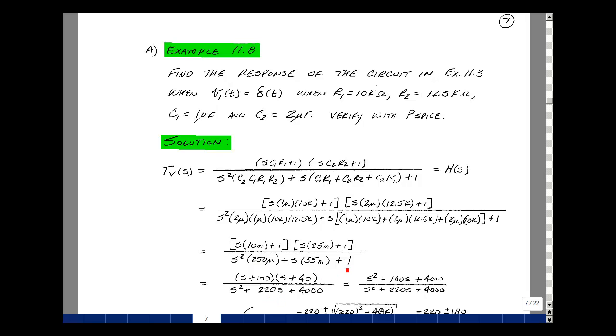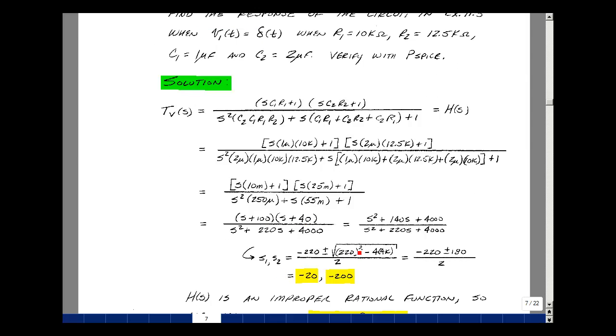Now let's pull out a 10 milli and a 25 milli from the numerator. So 1 over 10 milli is 100, 1 over 25 milli is 40. Pull out a 250 micro from the denominator. It's actually going to cancel with 10 milli times 25 milli. We got s squared, and then 250 micro divided into 55 milli is 220, and 1 over 250 micro is 4,000. Multiply out the numerator: s squared, 140s, and 100 times 40 is 4,000. Using the quadratic formula, I've got minus 220 plus or minus the square root of 220 squared minus 4 times 4,000, divided by 2. That gives me minus 20 and minus 200.